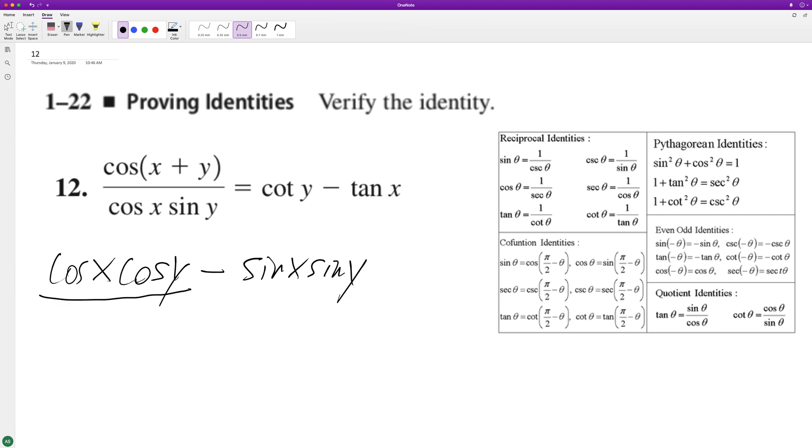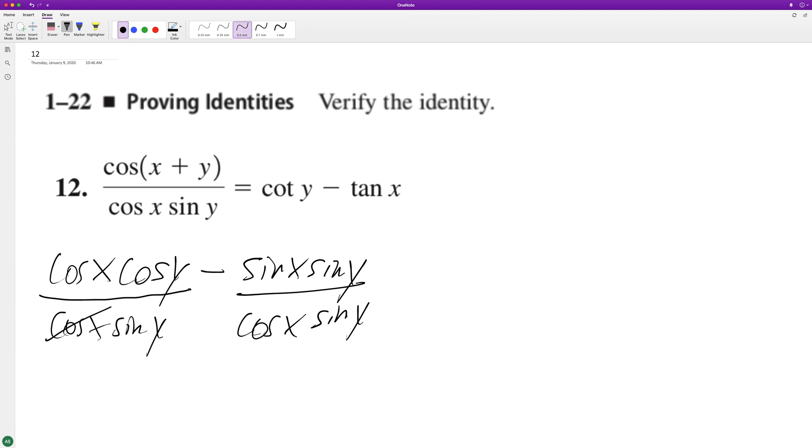And each of these can be broken down into cosine X sine Y over cosine X sine Y. I didn't have it on here, okay. So this cancels this out, and then the sine Y's cancel out, so